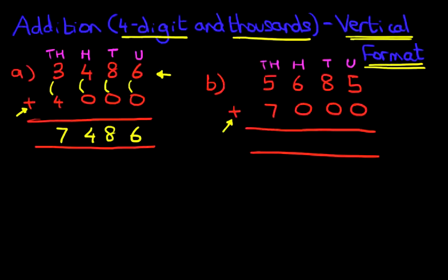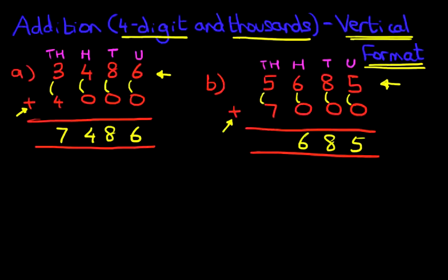Let's begin our addition. We know that if we're adding zeros, that does not change. The top three digits — 685 on the top row — do not change. Now we move on to the thousands: five plus seven is 12. Put one here and two here.